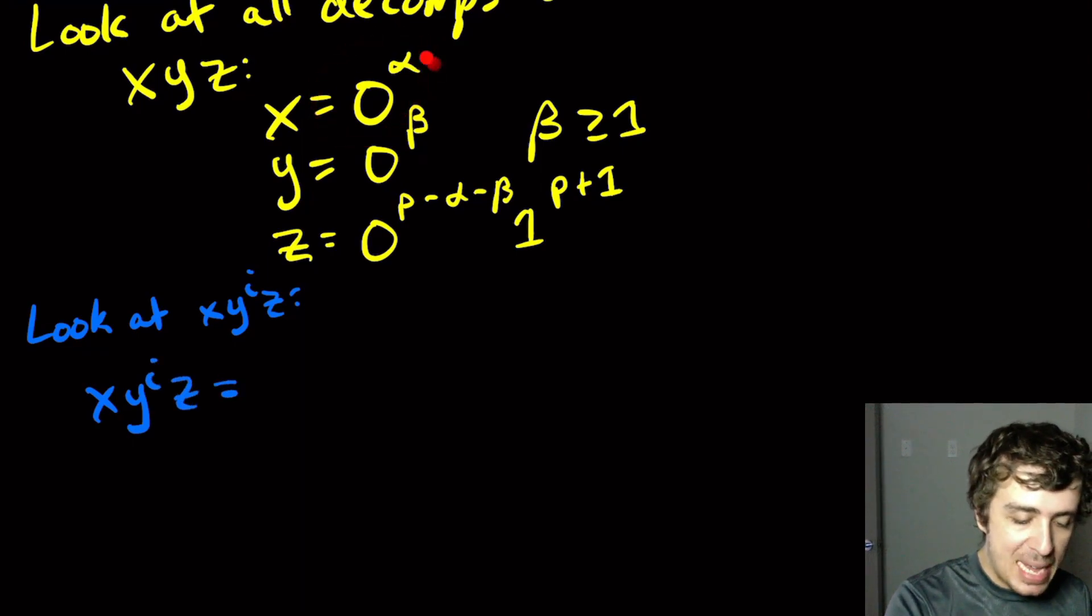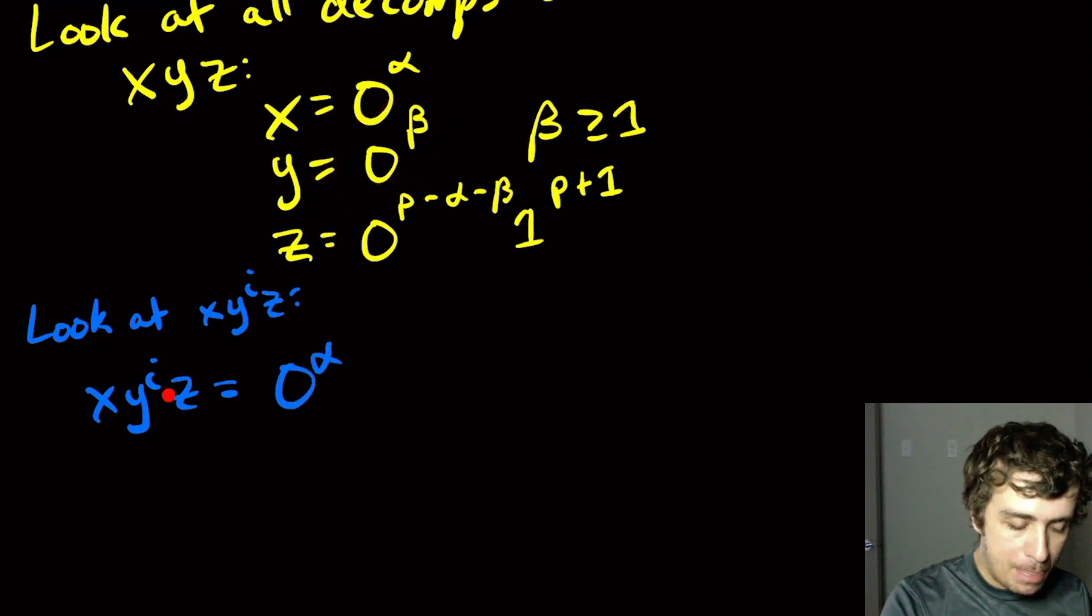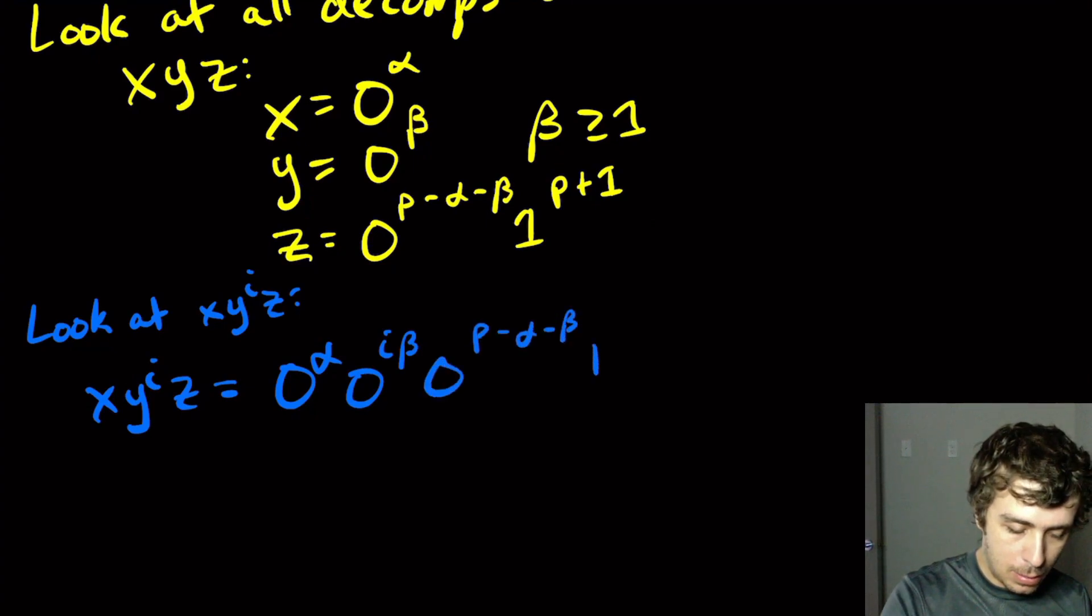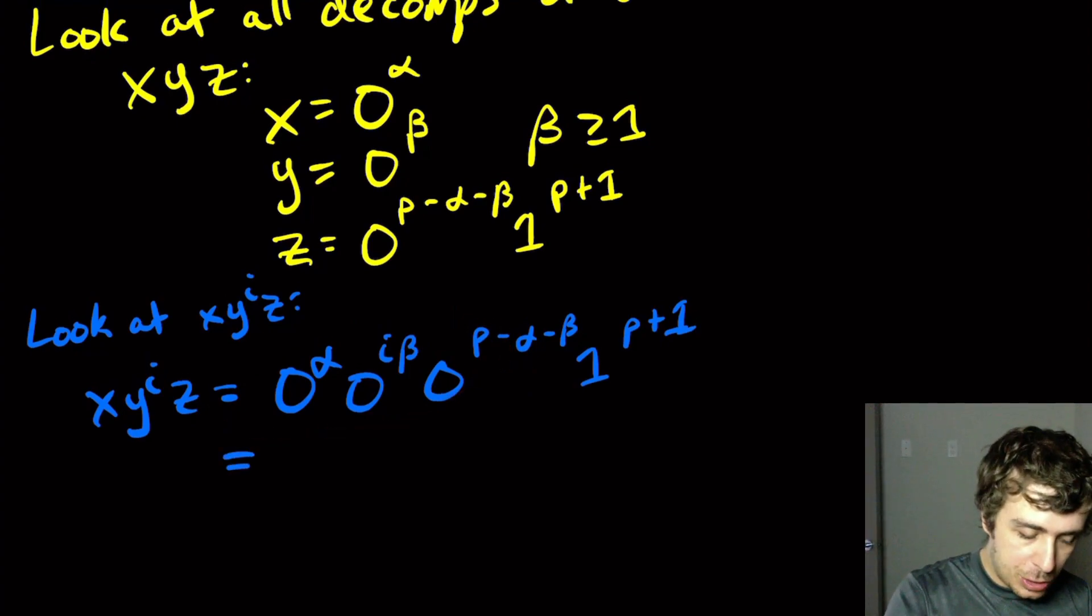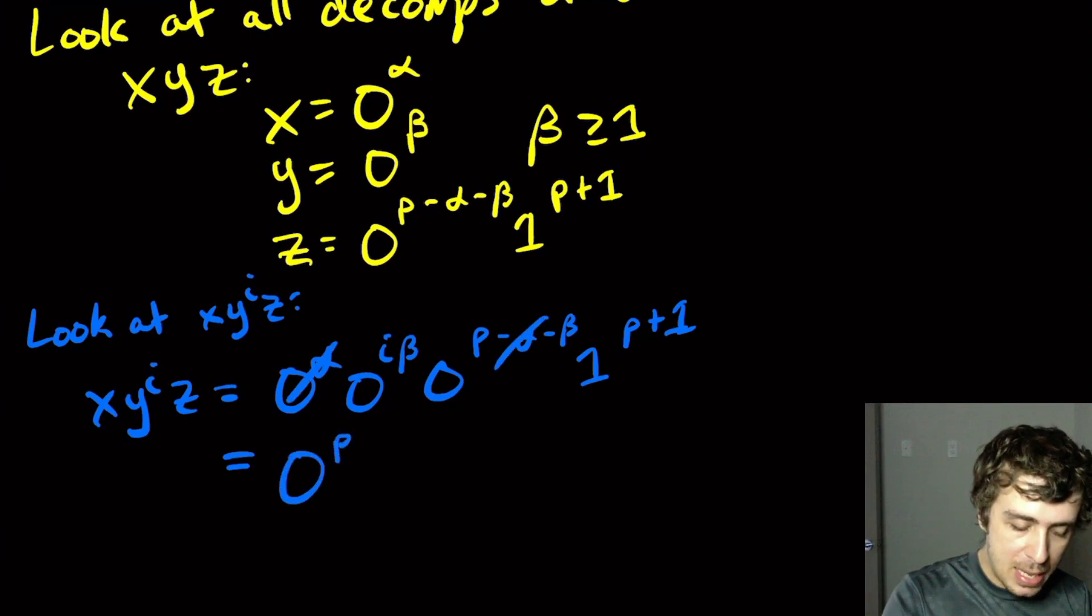Well, we're just going to copy and paste the X bit. So that's 0 to the alpha. We're going to have I copies of the Y bit. So that's going to be I times beta upstairs. So I beta upstairs. And we have one instance of Z, so I'm just going to straight copy this down. 1 to the P plus 1. And like the other proofs, we have a section of 0s that we can just collapse all the exponents in. So the alphas are going to get killed off. And just like any other proof, we're going to have P plus I beta minus beta 1 to the P plus 1.